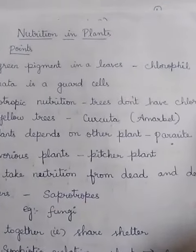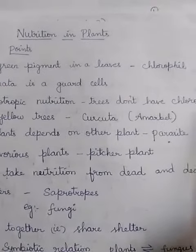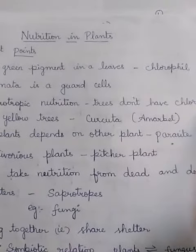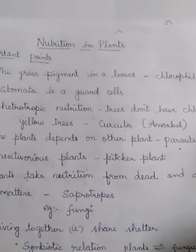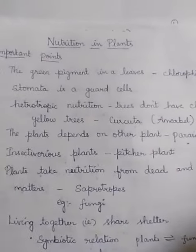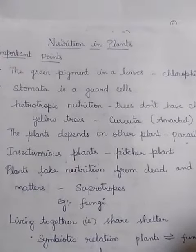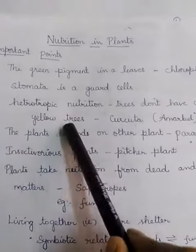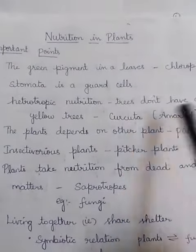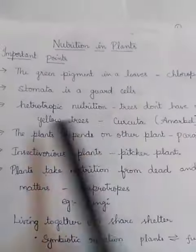or insects or animals to take their food. Such trees may be yellow in color. Examples include Cuscuta and Amarbel.